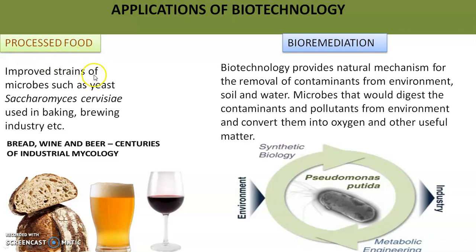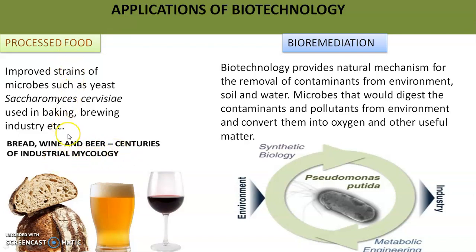Next, we will talk about processed food. We have discussed in the microbes lesson about yeast Saccharomyces cerevisiae, which is a baker's and brewer's yeast, used in many food production processes. Such microbes are genetically improved, and improved strains are used in industries like bread making, wine, beer, etc. The study of yeast and other fungi is called mycology, and for industrial purposes their strains are improved through genetic engineering to bring out better results.